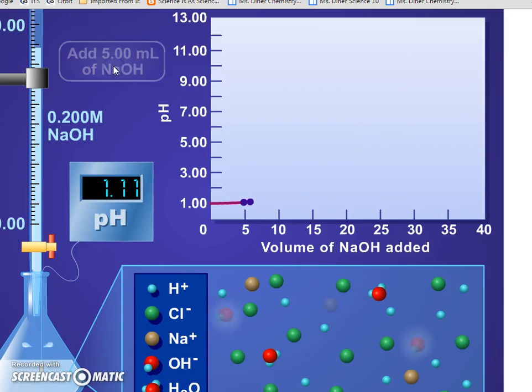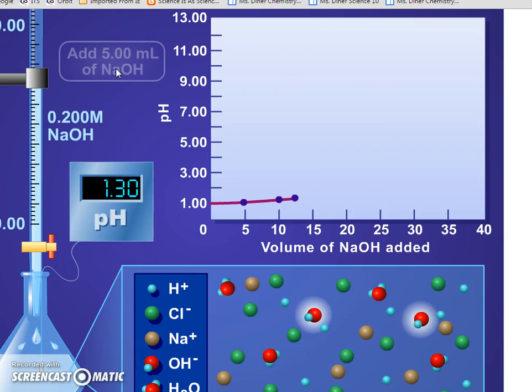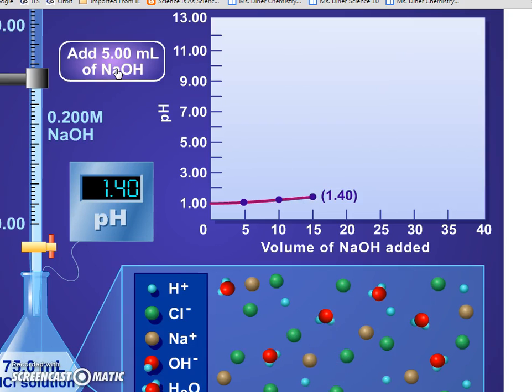If I add five milliliters more, same thing: sodium hydroxide comes in, binds with the hydrogen ions, forms water. There's no free hydroxide, and the pH stays pretty much the same. Add another five milliliters, same thing—the hydroxide binds the hydrogen ions forming water.